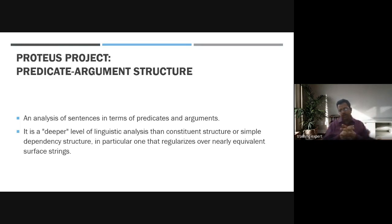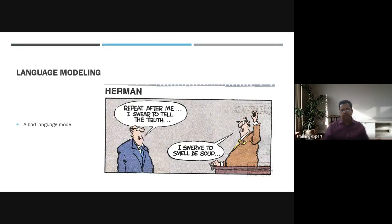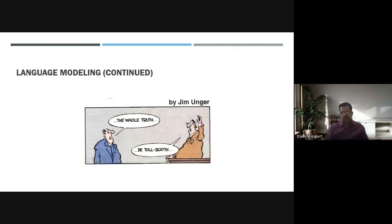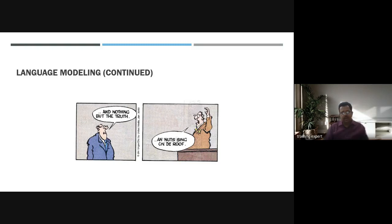Predicate-argument structure is an analysis of sentences in terms of predicates and arguments — a deeper level of linguistic analysis covering the intent and the way you speak. As an example of a bad language model, if someone says 'repeat after me, I swear to tell the truth,' the system might understand 'I swear to smell the soup' — what you say and what the system understands can be entirely different.